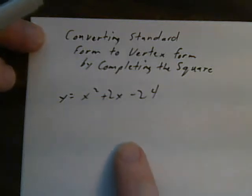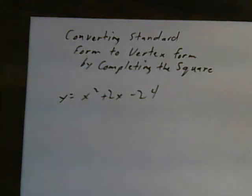Here I've got a quadratic function y equals x squared plus 2x minus 24. From this function I know that my y-intercept is negative 24 but I don't know much else. So if I get into vertex form I'll be able to find the vertex.